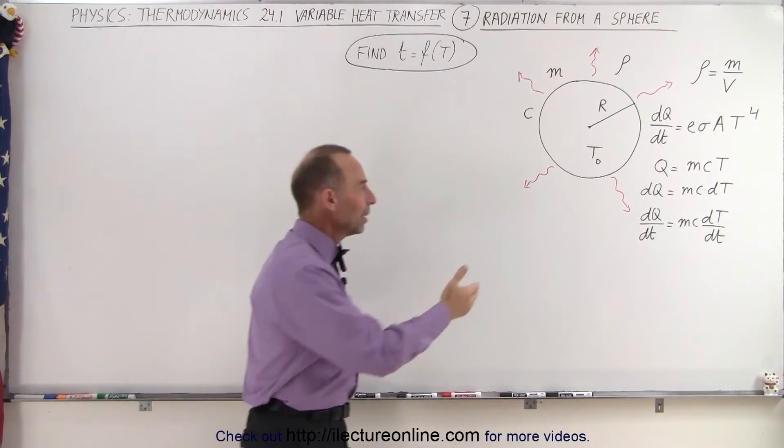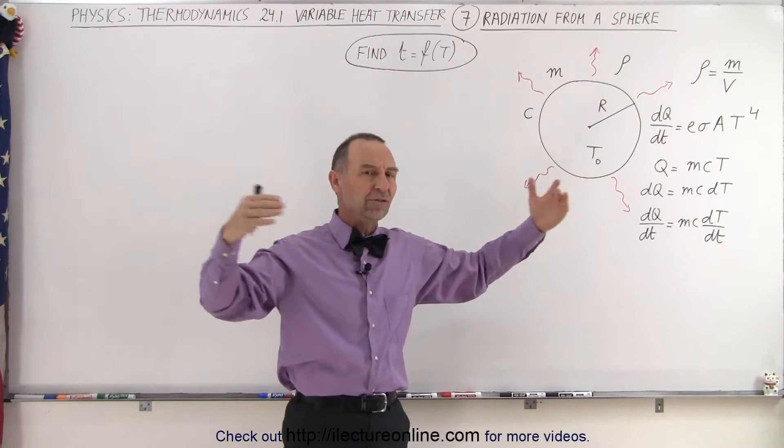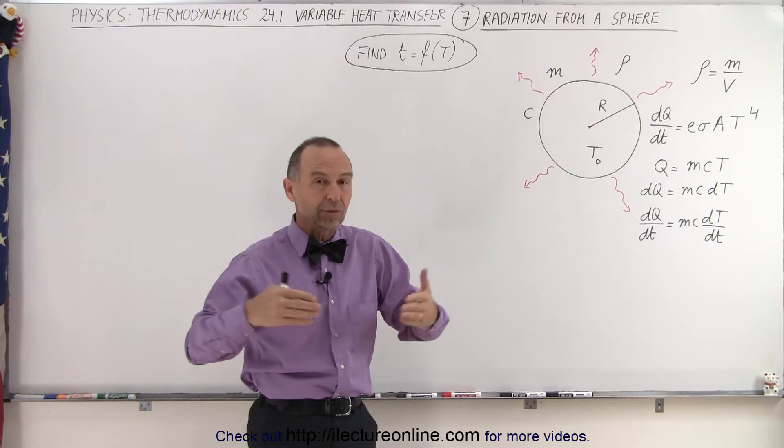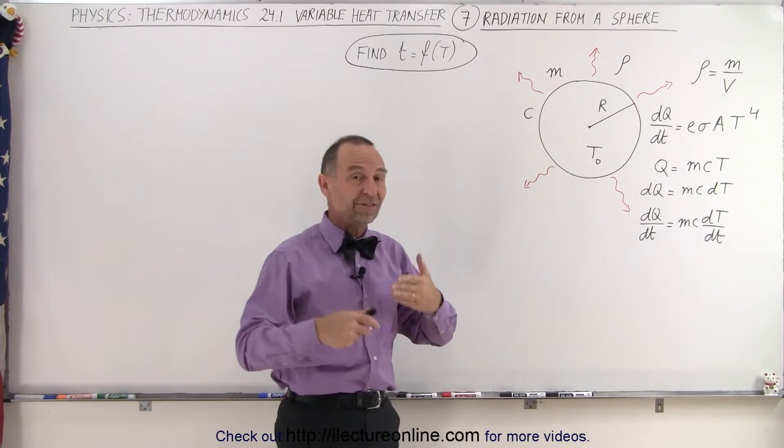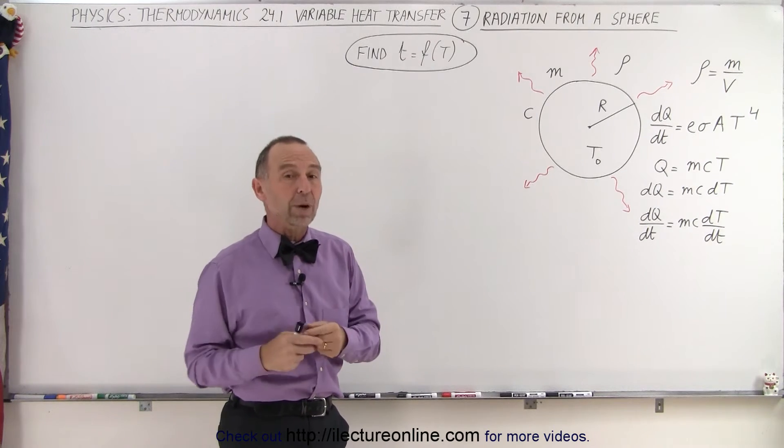And of course the rate at which it radiates heat depends upon the difference between the temperature of the object and the temperature of its surroundings. And for simplicity we're going to take that to be equal to zero Kelvin in the surroundings. So it's going to simply be a function of its temperature. As the temperature of the object drops, the rate at which it radiates drops as well.